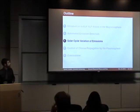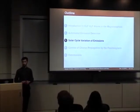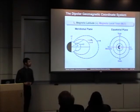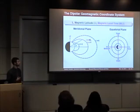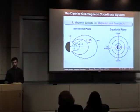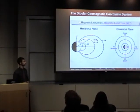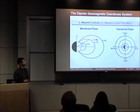I'll next discuss another contribution that makes use of the output of this automatic detection system. Before going into the details of the science results, it helps to discuss the dipolar geomagnetic coordinate system, which consists of three different coordinates: L, magnetic latitude, and magnetic local time.